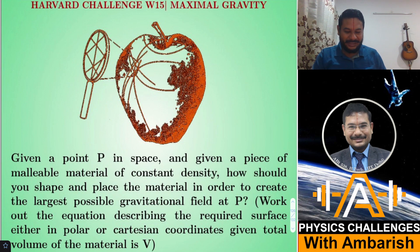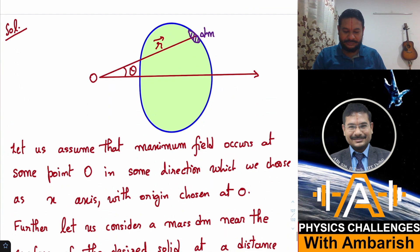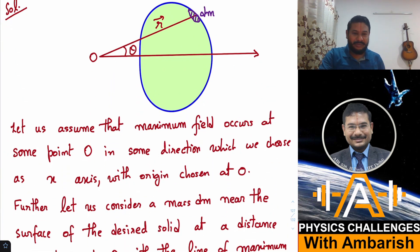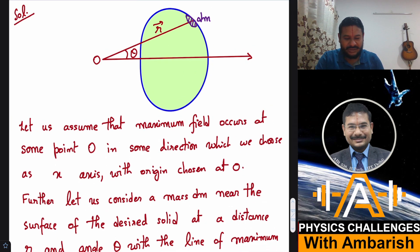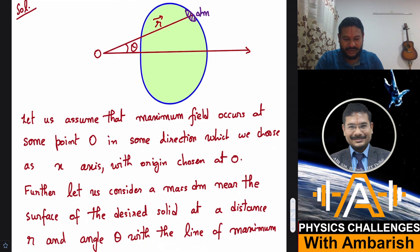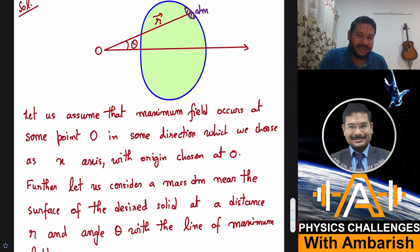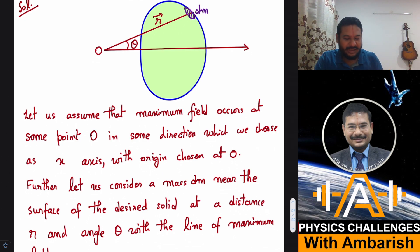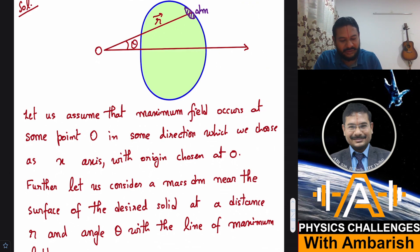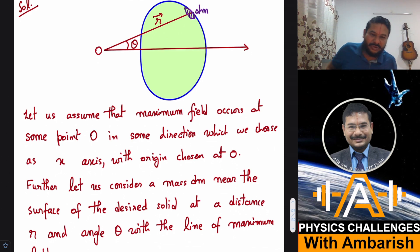I'm going to build up an argument — please follow very carefully. I do not know the shape a priori, but I've drawn some shape. I'm not claiming this is the correct shape; it could be regular or irregular. The exact equation will come out later. For the sake of argument, I've shown some arbitrary shape.